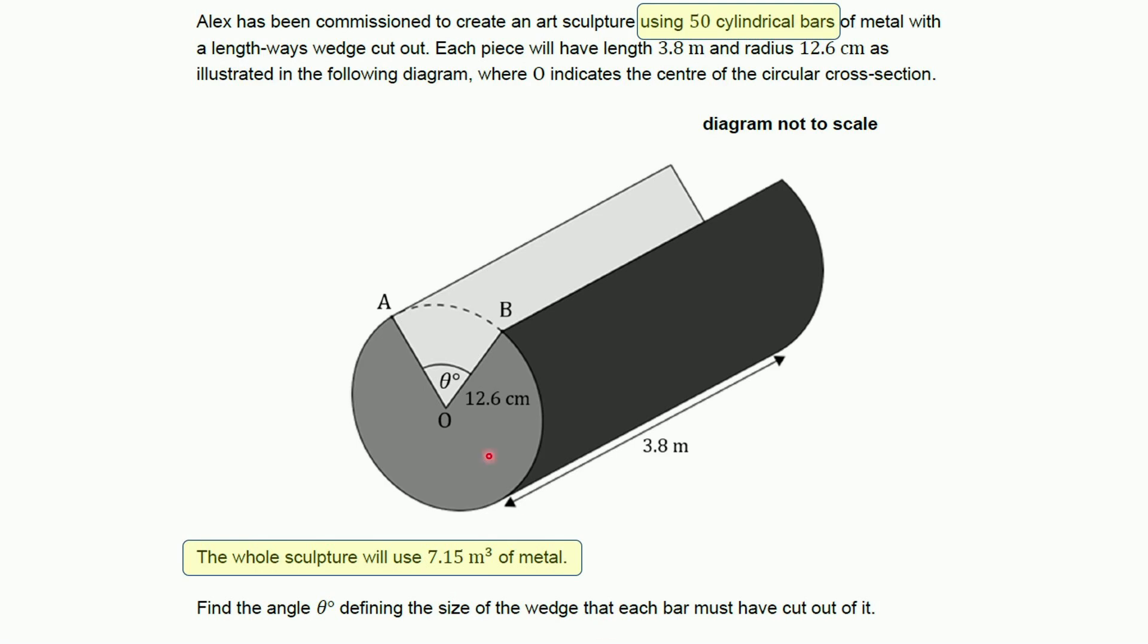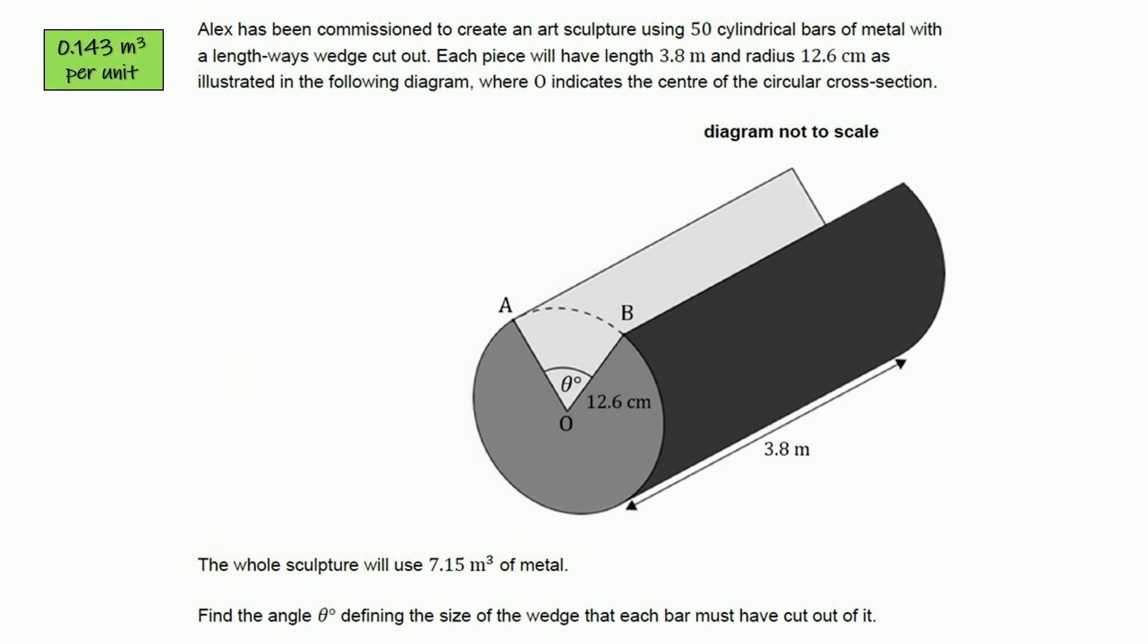And I know that we have to find this angle theta that's the cross sectional angle, so we need to figure out what the volume of just one of them is. So I just took the entire material, 7.15 meters cubed, and divided by the 50 units there are, plug that into the calculator and you find that each unit has a volume of 0.143 cubic meters. So, let's tuck that away.